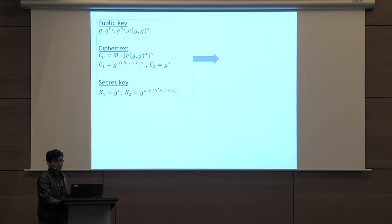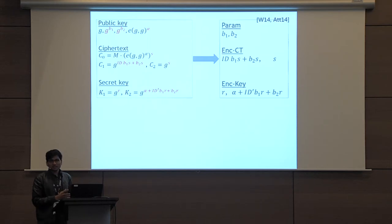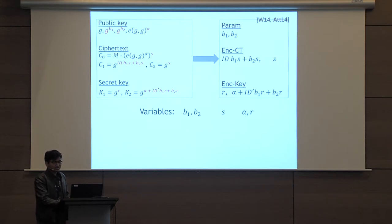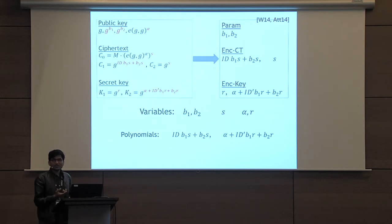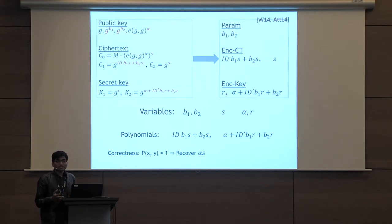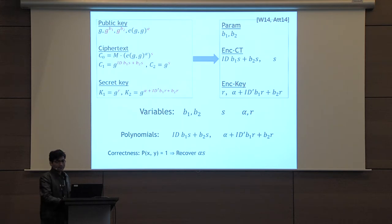We can extract the main components of the identity-based encryption scheme into an encoding scheme. This encoding scheme has five variables. The first two variables are common variables. The variable s is part of the ciphertext encoding, and the variables alpha and r are part of the key encoding. There are two polynomials — one in the ciphertext encoding and one in the key encoding. For correctness, we require that when the predicate is true, it should be possible to combine these variables and polynomials to recover alpha·s. In this sense, alpha and s are somewhat special variables.